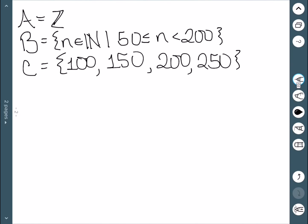Let's consider these three sets. We'll let A be equal to the set of integers. B is the set of natural numbers that are greater than or equal to 50 and less than 200. And then C is the set 100, 150, 200, and 250.